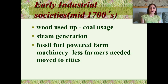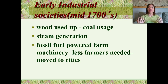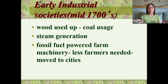Then we have our early industrial revolution societies, which took place in the mid-1700s. They used up a lot of wood and started using coal. We saw steam generation come into play, fossil fuel-powered farm equipment, and that meant we needed less actual manpower. So you started seeing a lot of farmers move into the cities.